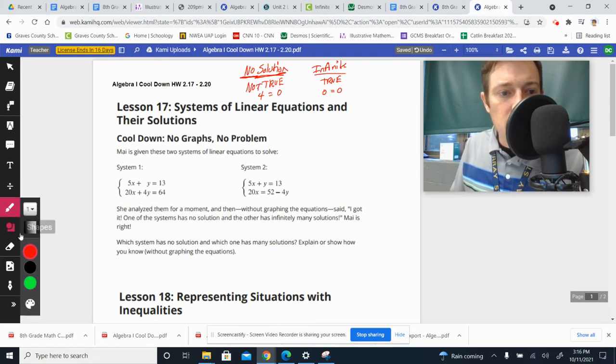If I take the first one here and I multiply everything in the top by 4, that will give me 20x's and 4y's, which is exactly what I want to happen for things to eliminate.